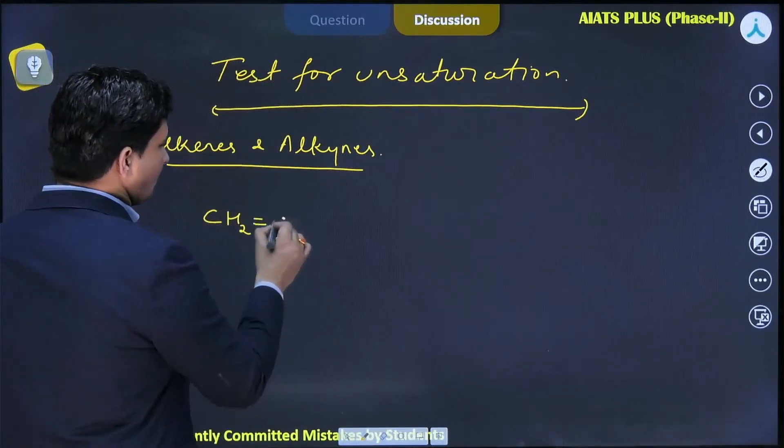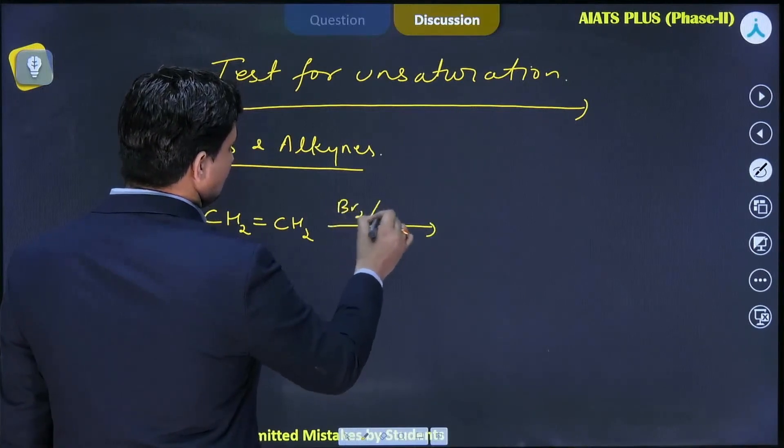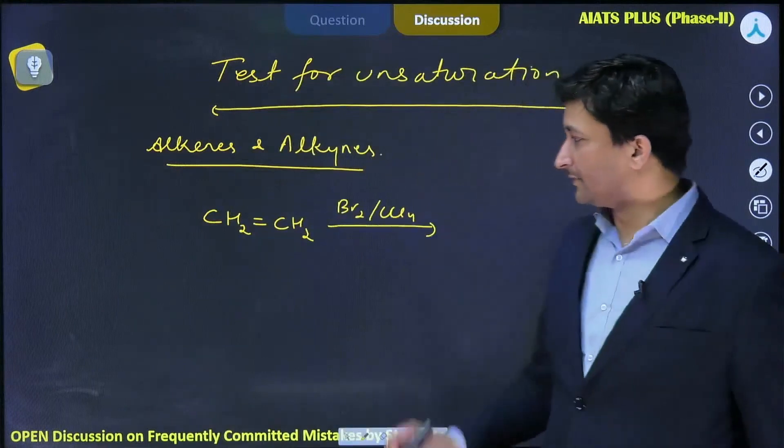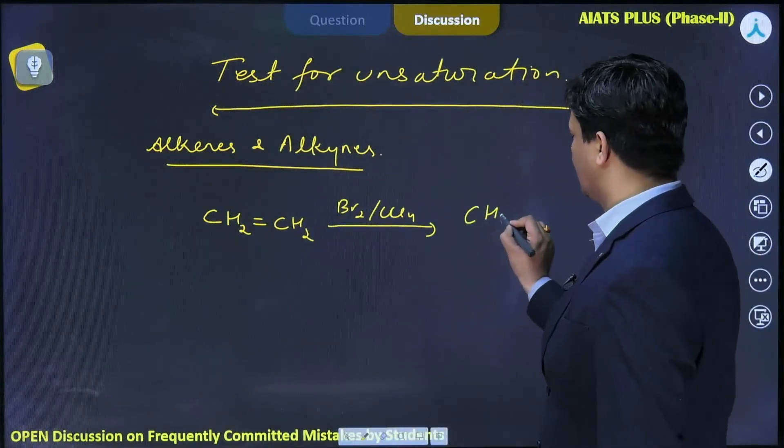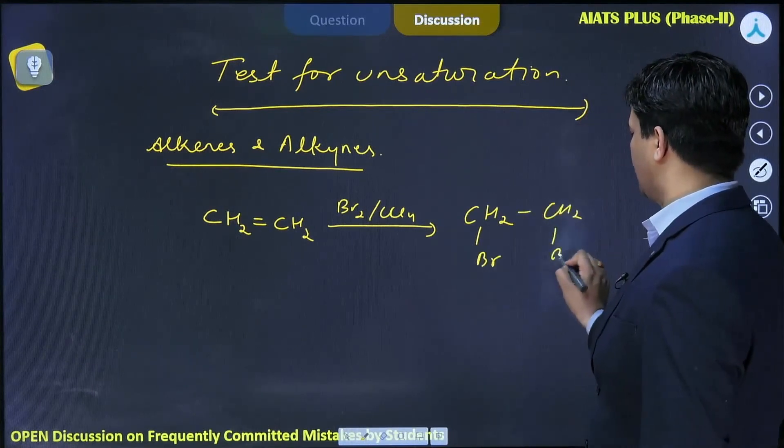Suppose CH2 double bond CH2 is there and it is allowed to react with Br2 in CCl4. We will get CH2 Br, CH2 Br.